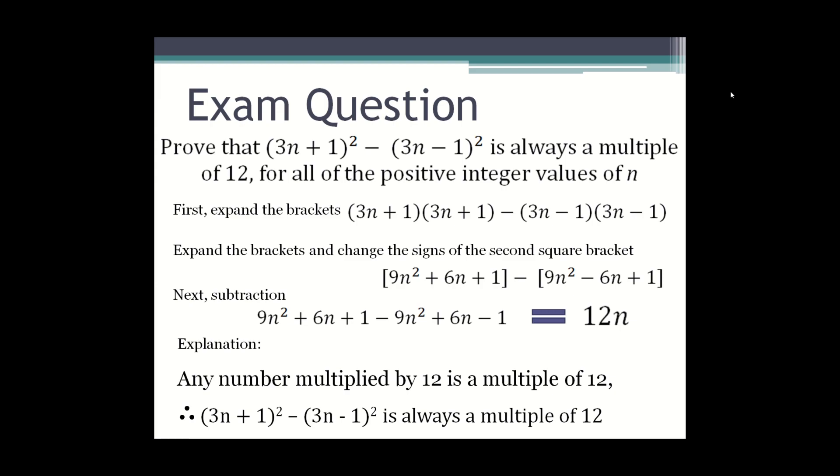So the three dots means therefore (3n + 1)² minus (3n - 1)² is always a multiple of 12.